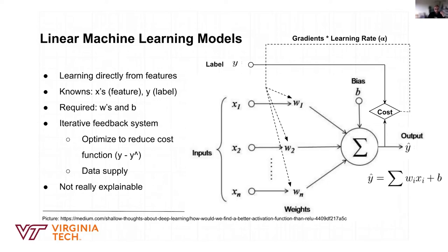Our goal is to train this model iteratively so we can find the weights that minimize the difference between y-hat — the predicted output — and y, the original label. We do this by calculating the difference, which we call the cost function or loss function, and use this difference to update the weights. We keep passing the data, multiplying by weights, calculating the predicted value, calculating the difference, and updating our weights until we reach the best accuracy possible.